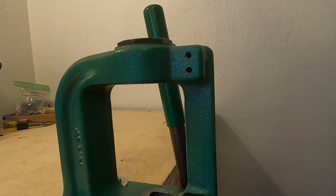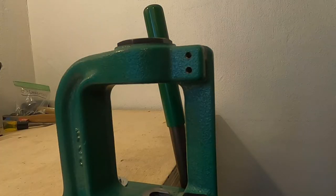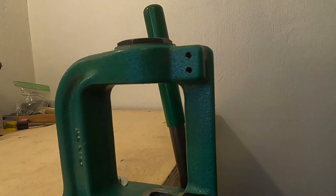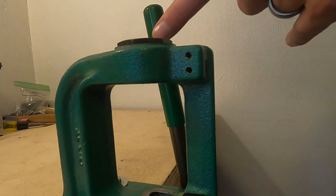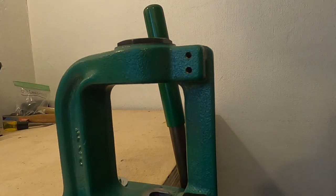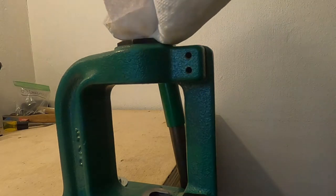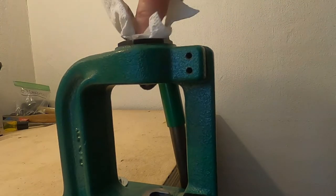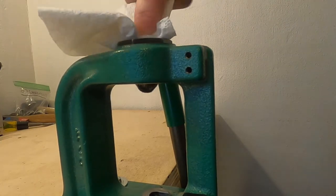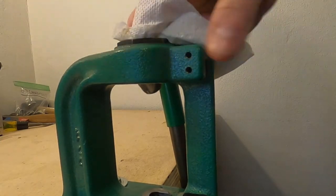Once I have all the outer surfaces wiped down with the paper towel with the lubrication on it, I'm going to clean out the threads where the reloading dies get threaded into. So just take your paper towel and just kind of push it in with your finger. Make sure you get into those threads really good.